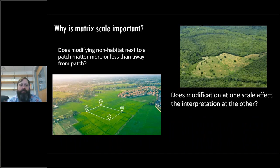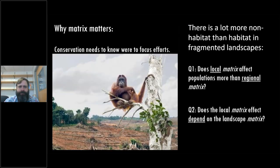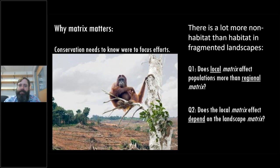So far, research has really considered both of these scales together — often the entire landscape is altered in a single way. The question is: which is most important, and do the two scales interact? We need to know if modifying non-habitat next to a patch matters more or less than modifying it away from a patch, and whether we need to understand what's happening across the entire landscape to interpret local-scale effects. As landscapes become more fragmented, there will be a lot more non-habitat than habitat remaining, making this increasingly important for conservation.